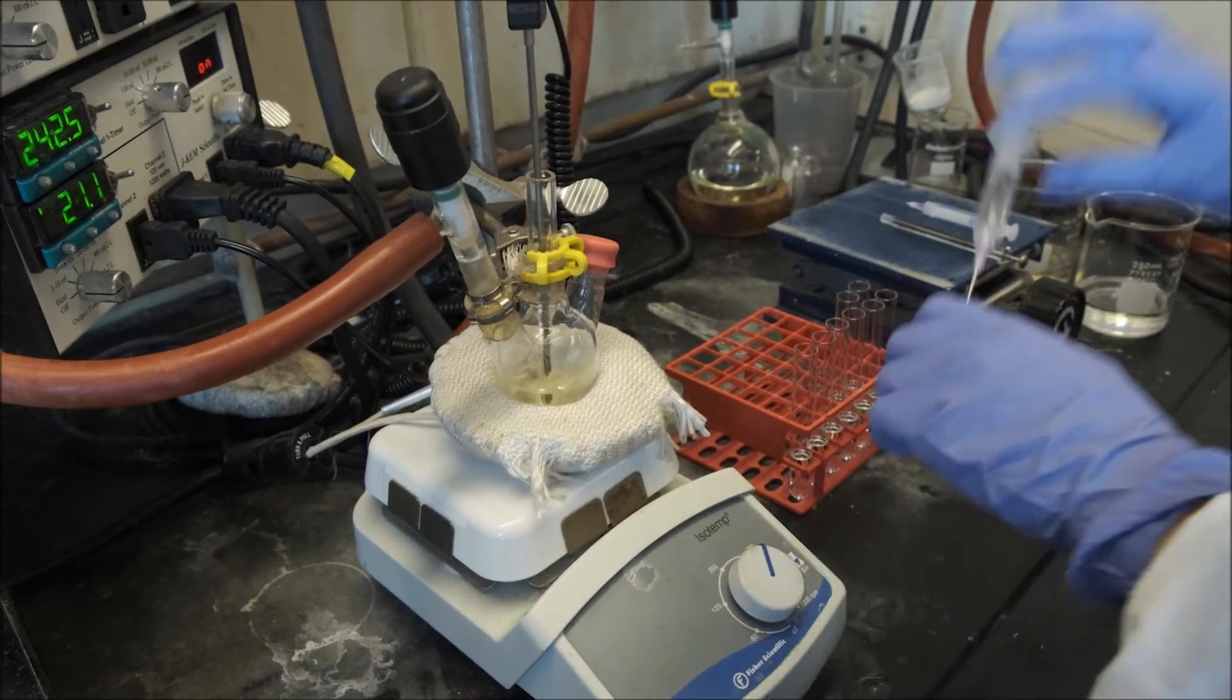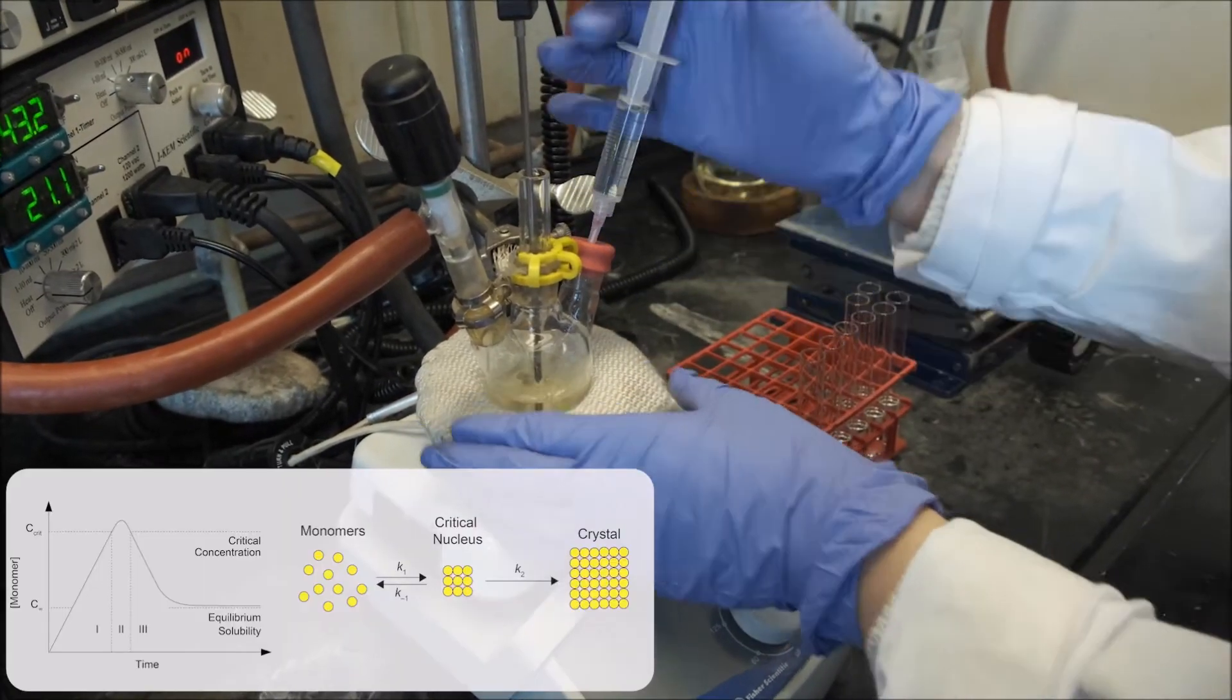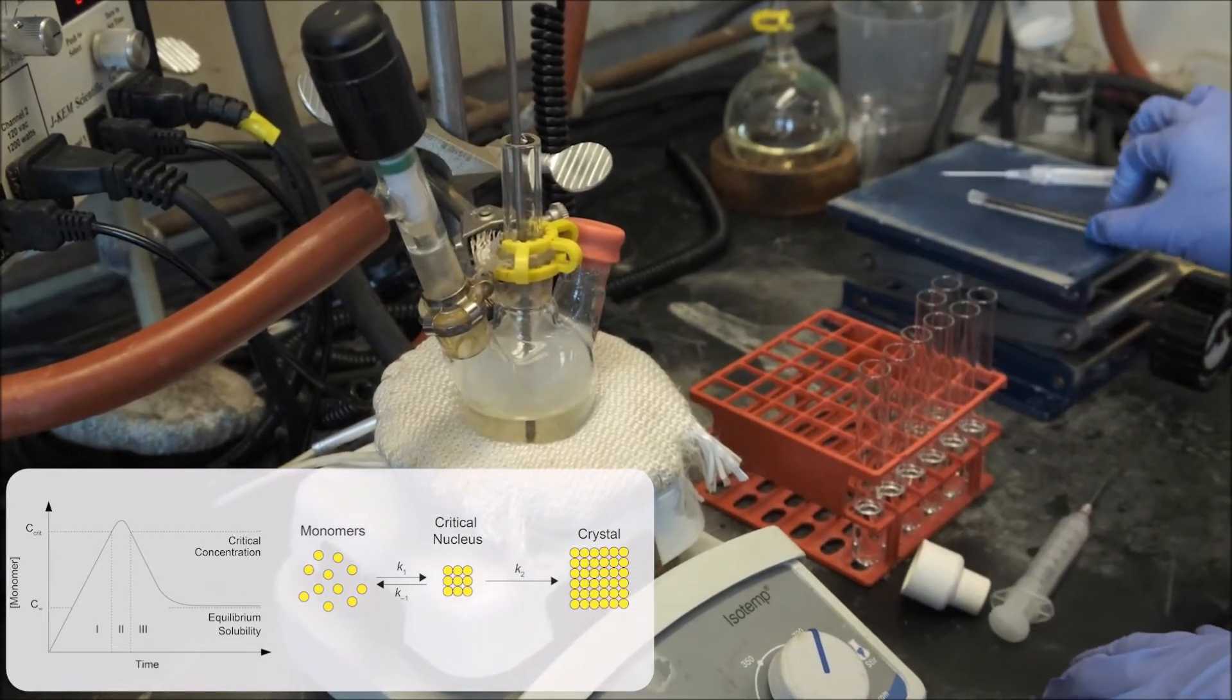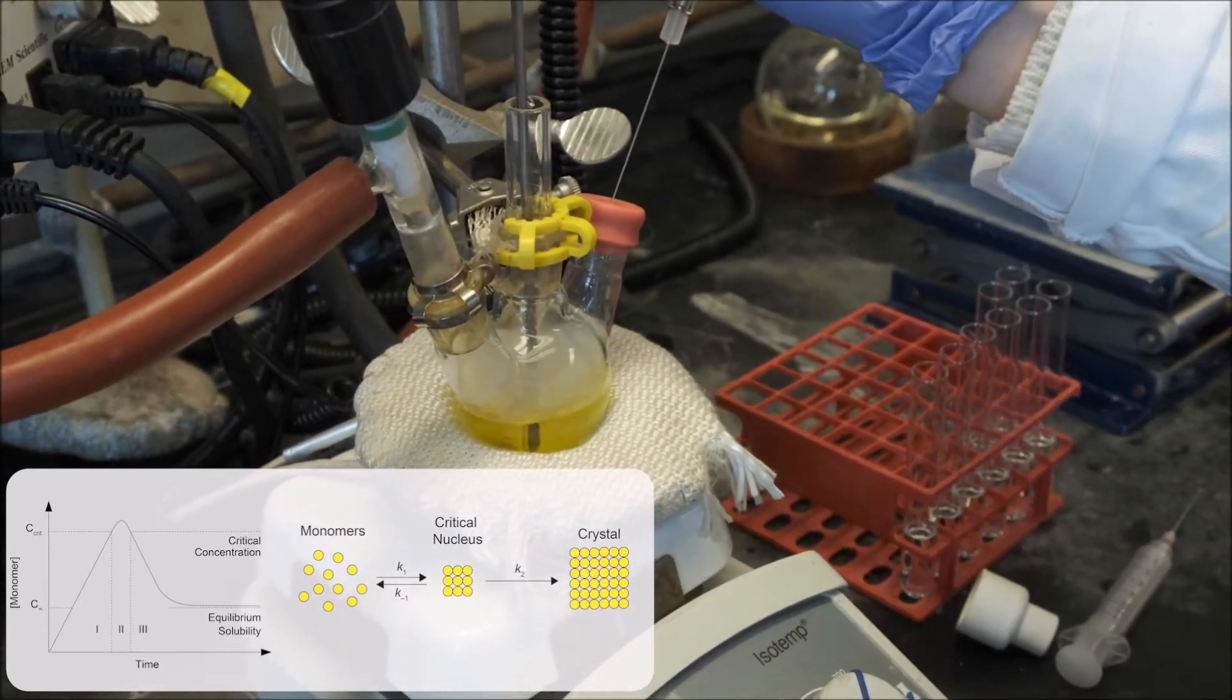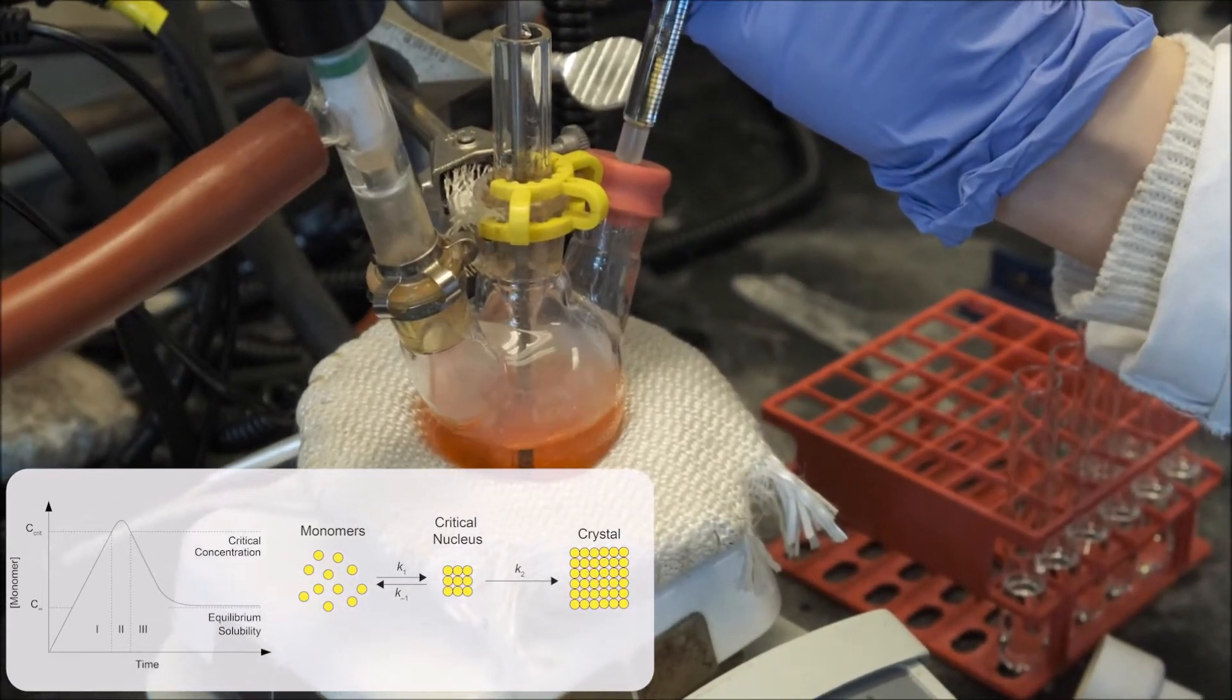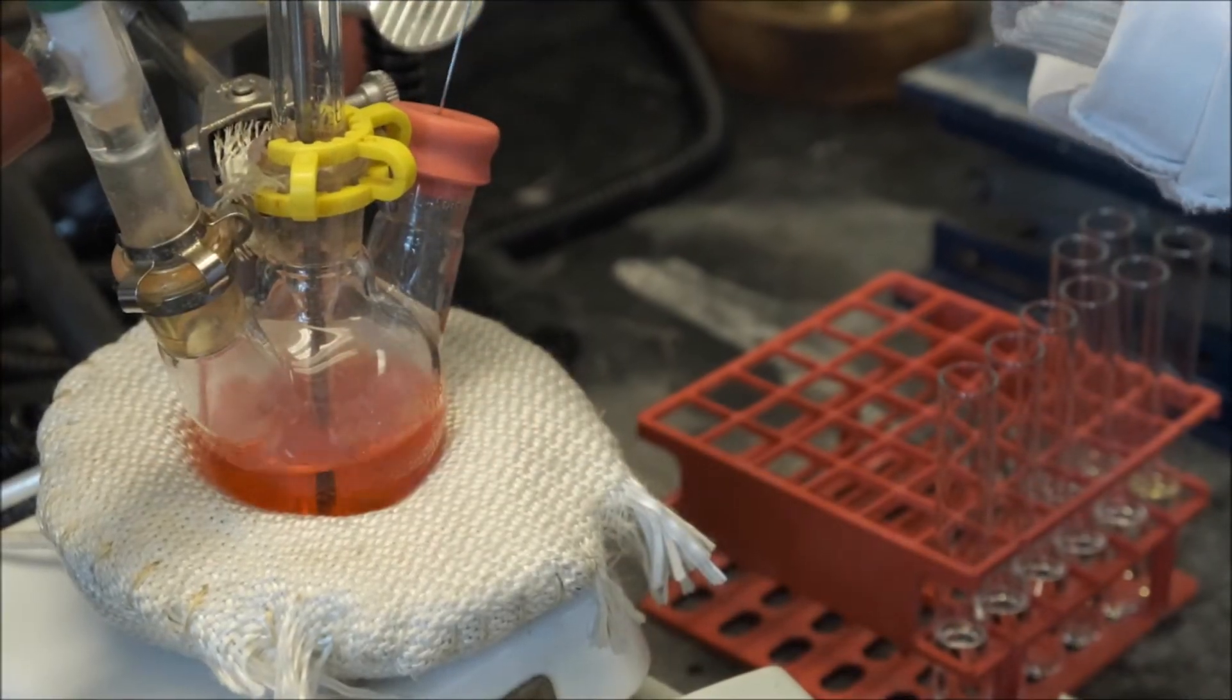To start the reaction, we do a hot injection of the selenium precursor into the reaction flask. The precursors combine to form a reservoir of monomers, which are the building blocks for the nanocrystal. When the monomer concentration reaches the critical concentration, the particles start to nucleate and continue to grow until the monomers are depleted.